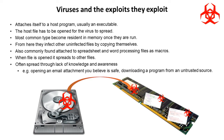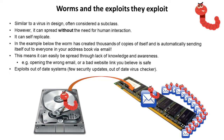Worms are very similar to viruses in design and are often considered a subclass of viruses. There is one big difference though: a worm is able to spread without the need for human interaction — it is able to self-replicate. In the example shown here, the worm has created thousands of copies of itself.